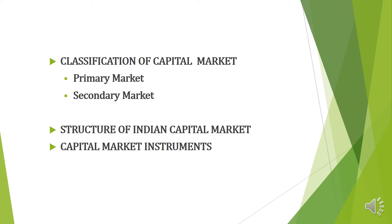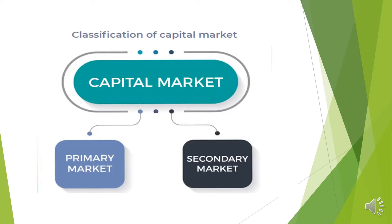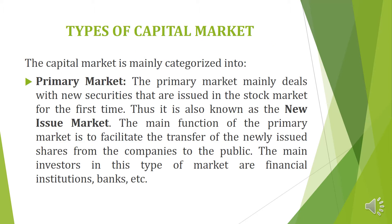Classification, structure, capital market instruments. The capital market is mainly categorized into two, that is primary market and secondary market. The two types of capital market are primary market and secondary market. Types of capital market: first one, primary market; second one, secondary market.